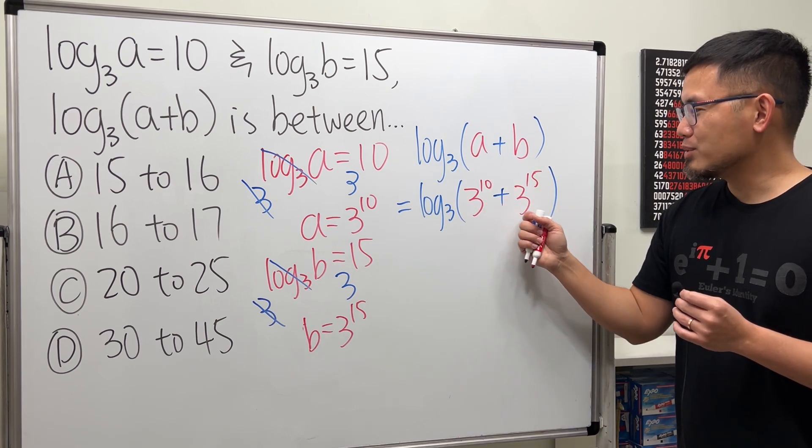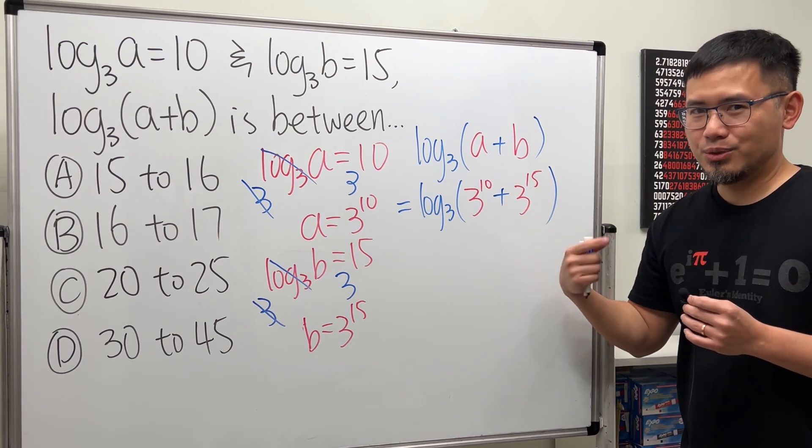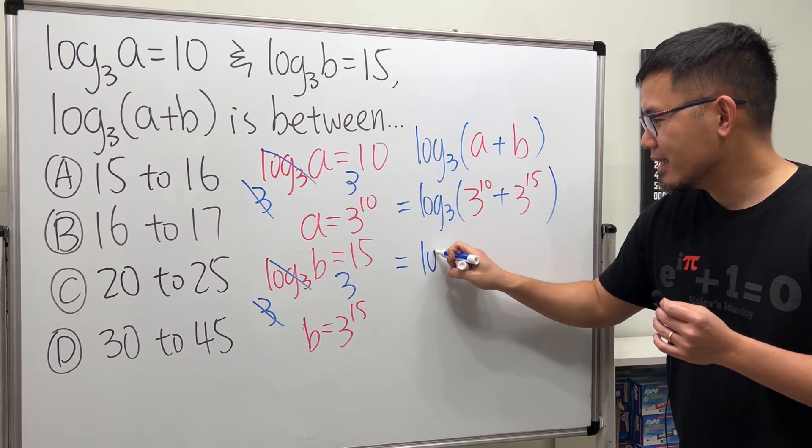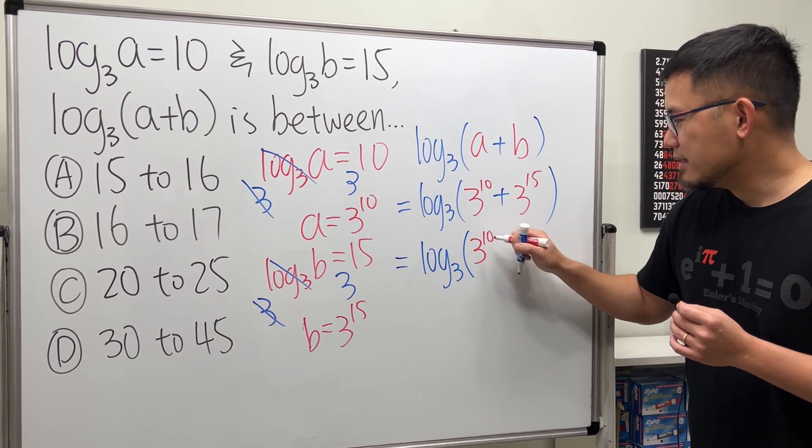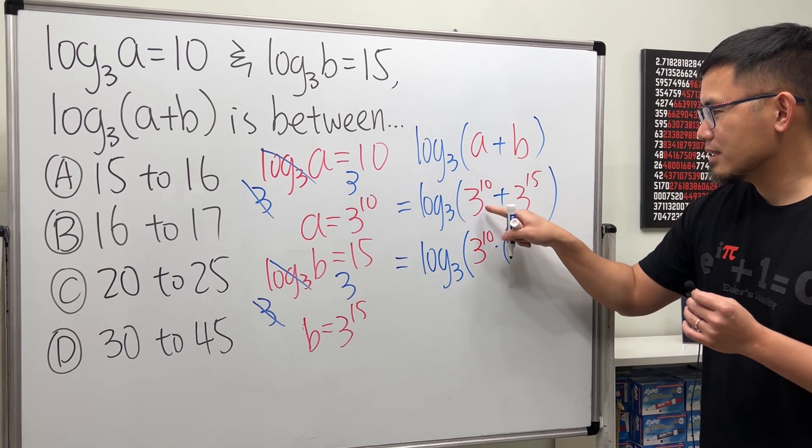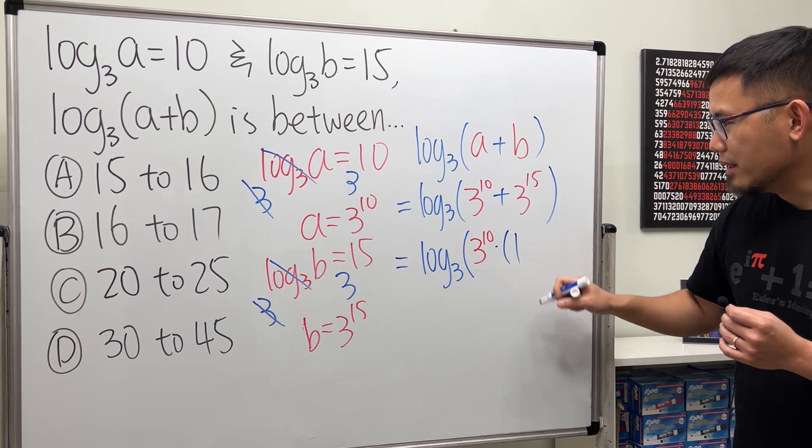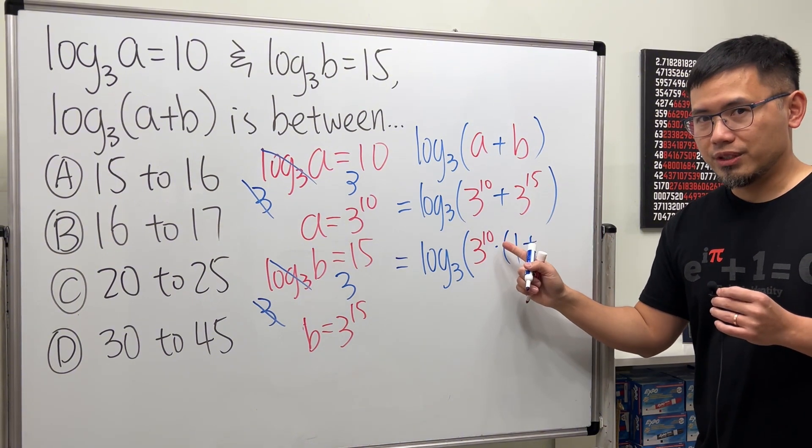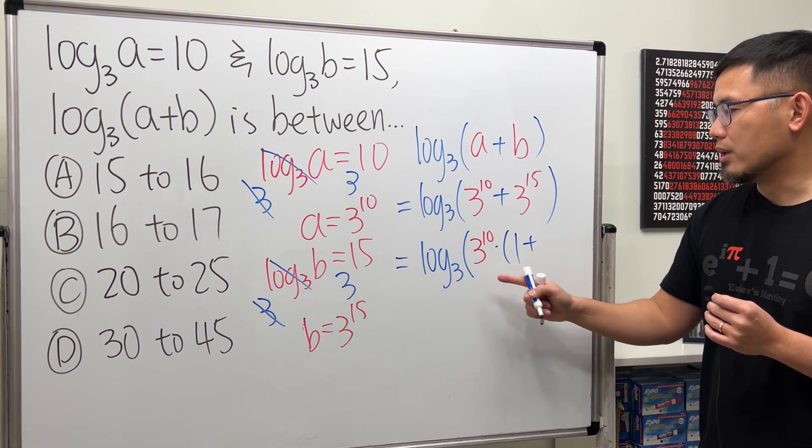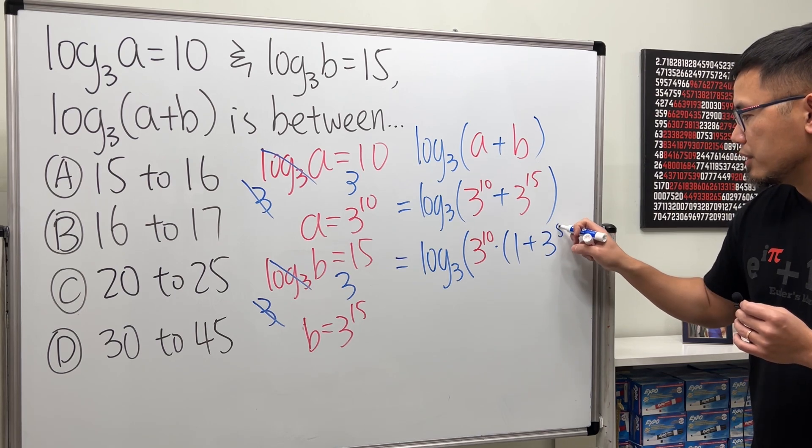3 to the 10th plus 3 to the 15th, we can factor out 3 to the 10th. So this right here equals log base 3 of, factoring out 3 to the 10th. Then we multiply this with, the first term will just become 1. And for the second term, you can just do 3 to the 15th divided by 3 to the 10th. Just subtract your power. So you will have 3 to the 5th.